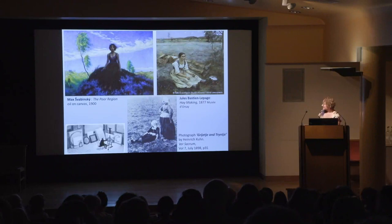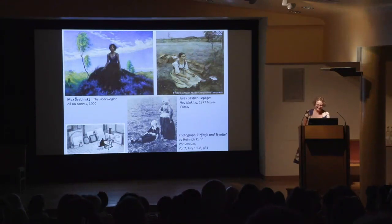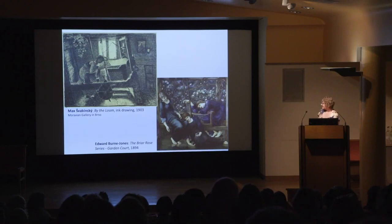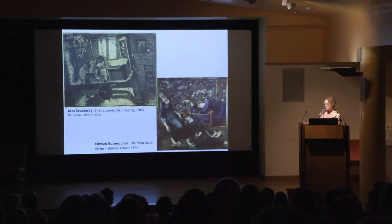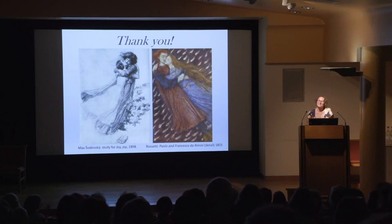Svobinský using Elíška in a kind of traditional Central Bohemian setting — but he's literally quoting a figure from the Briar Rose, which was very inspiring. And this is the end of my talk. I've gone over. Thank you so much. There's a lot to explore.